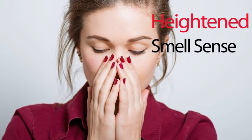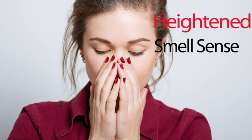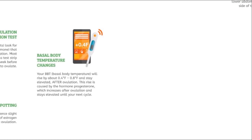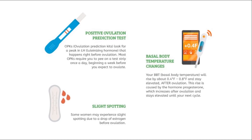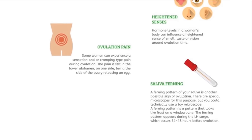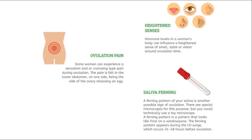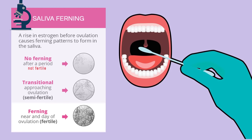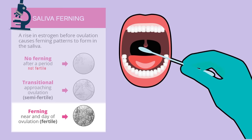Lightened sense of smell is another common symptom which can be experienced around the time of ovulation. Other signs and symptoms include increase in libido, changes in cervix positioning, and light spotting due to estrogen hormone levels dropping right before ovulation. Also, appearance of a ferning pattern in saliva, which appears frost-like under a microscope around ovulation, as shown here.